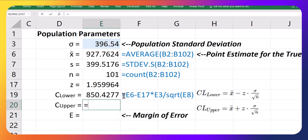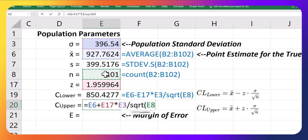For the upper limit, again, take the sample mean. Now add the z-score times by the true population standard deviation, and then divide by the root of the sample size, like that.